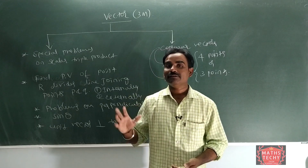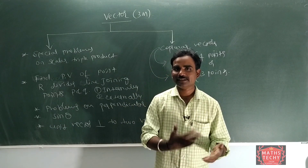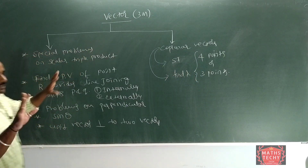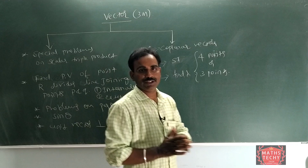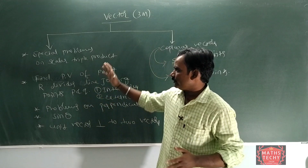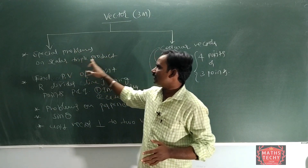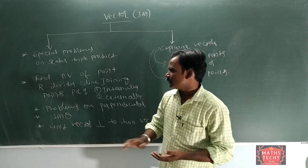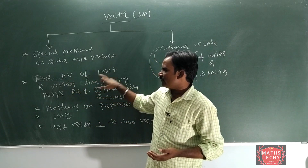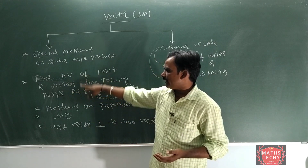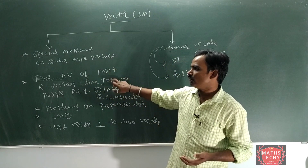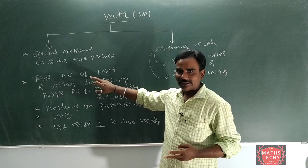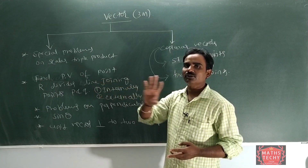I am going to explain the concept for 3 marks — Vectors 3 marks. In this section there are special problems on scalar triple product. If we find the position of a point, this is actually a derivation. This is the maximum focus — in total, 2 questions. It is very simple.